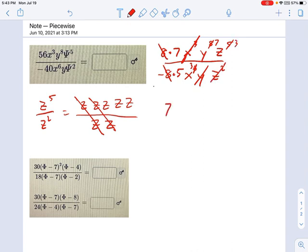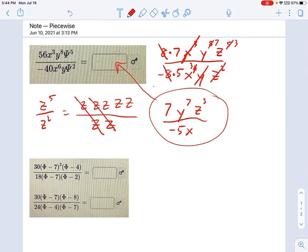So what we have here is 7, no x's. There's a y to the 7th power, and a z cubed, all divided by negative 5. Let's see, we've got an x, and that's it. So this would be your answer. If you want to write that in terms of negative 7 over 5, that's fine. I don't think it matters too much.